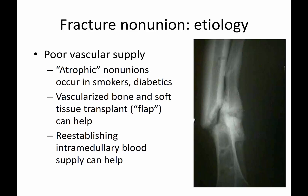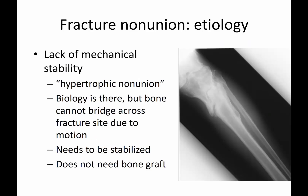Poor vascular supply is sometimes attributed to smokers and diabetics. Occasionally you can do a vascularized bone transplant — bringing in bone with a live blood supply, or a flap, to help a fracture heal. When there's potential blood supply in the intramedullary canal but it's walled off, going in and opening this up to reestablish the intramedullary blood supply can also help.